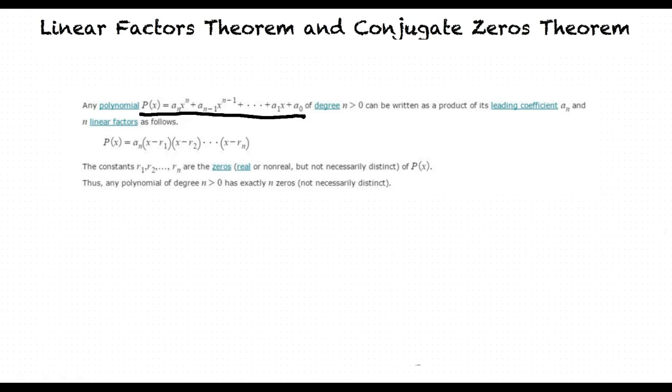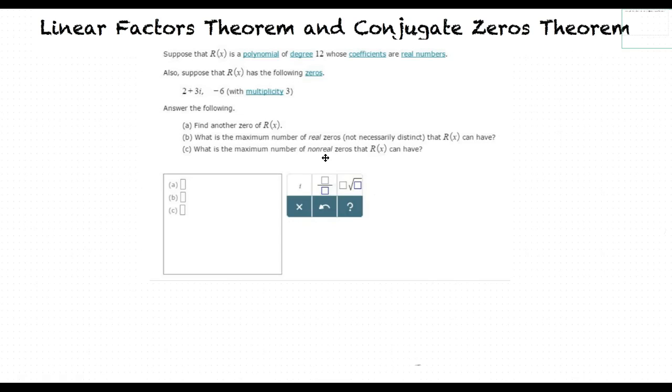This is a lot to take in at one time, so let's try an example so that way we can see a little more clearly how we can use these two theorems to solve problems. Suppose that r of x is a polynomial of degree 12 whose coefficients are real numbers. Also, suppose that r of x has the following zeros, 2 plus 3i and negative 6 with multiplicity of 3. Answer the following.